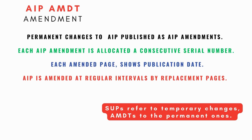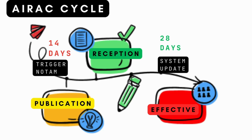Permanent changes to the AIP are published as AIP amendments. Each AIP amendment is allocated a consecutive serial number, and each amended page including the cover sheet shows the publication date. The AIP is amended or reissued at regular intervals by replacement pages.